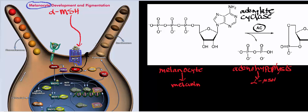From a biochemistry perspective, the alpha-melanocyte-stimulating hormone receptor is a G-protein-coupled receptor. There's a G-protein attached to the receptor, and when alpha-MSH binds, the G-protein alpha-subunit dissociates and activates adenylate cyclase. You don't have to know that for A&P class, but from a biosignaling perspective, that's how it works.